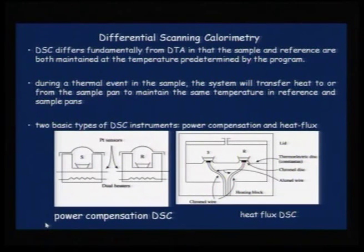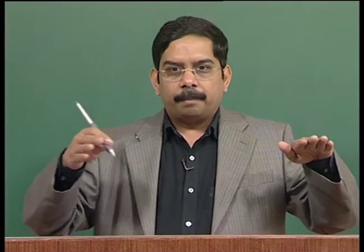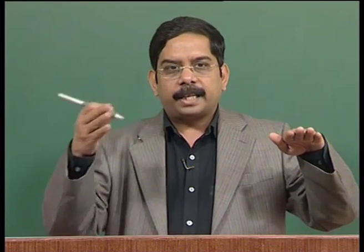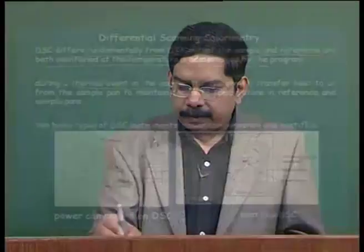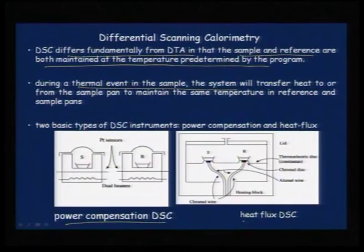In differential scanning calorimetry, the main difference from DTA is that the sample and reference are both maintained at the temperature predetermined by the program. At every temperature during the reaction — suppose the sample is at 100°C — both sample and reference are maintained at 100°C. Whatever change happens in the sample is recorded as an endo or exo peak. The system transfers heat to or from the sample to maintain the same temperature.